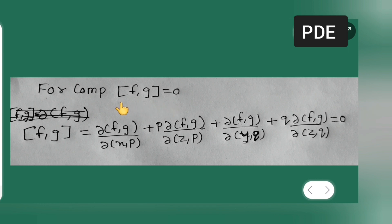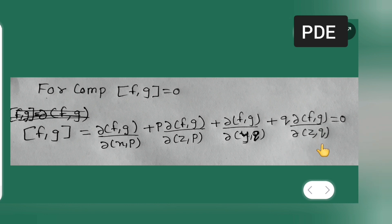The condition for the two equations to be compatible is the bracket [f, g] equals zero, where [f, g] equals ∂(f,g)/∂(x,p) plus p times ∂(f,g)/∂(z,p) plus ∂(f,g)/∂(y,q) plus q times ∂(f,g)/∂(z,q) equals zero. Mark this as star.